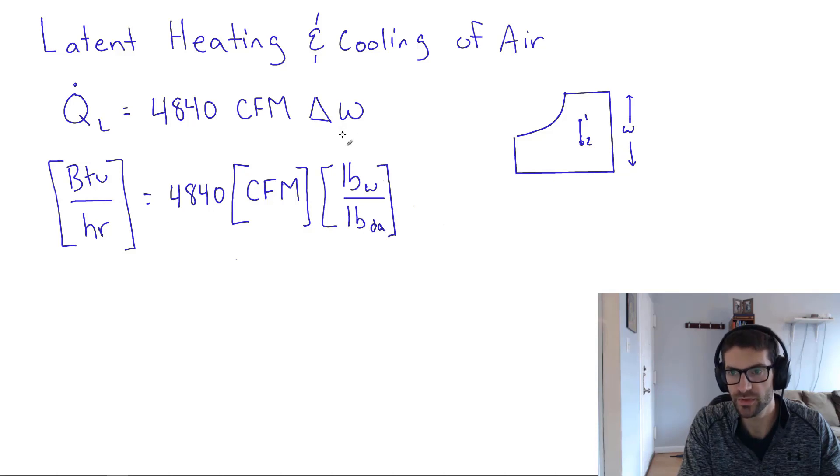It's also possible to express humidity ratio in a unit of grains of water per pound of dry air. You have to make sure that you're using pounds of water per pound of dry air when you use this formula.